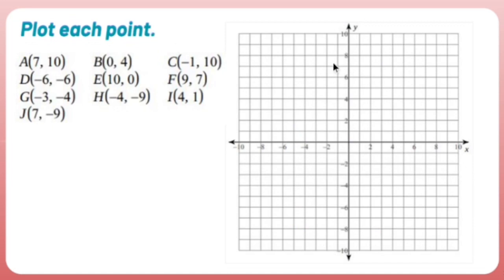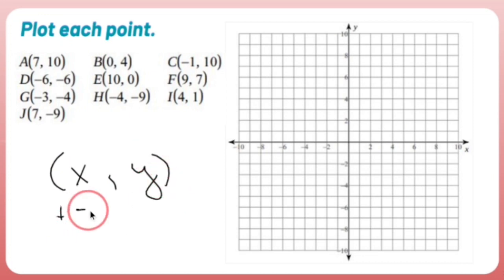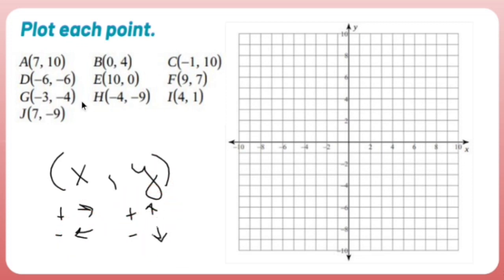Plot each point on this coordinate plane. Remember when you graph a point, it's given in xy form. Positive x goes right, negative x goes left. Positive y goes up, negative y goes down. To graph A, which is (7, 10), I go right 7 and up 10. And there's A.